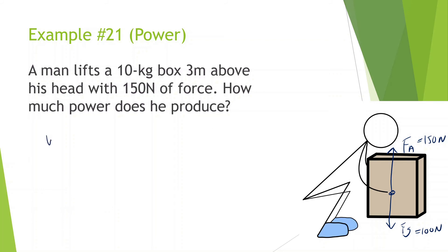So let's see, work done by the force applied. Force applied is 150, displacement is 3, and it's going in the same direction. So it's going to be cosine of zero. So this gives me the work applied: 150 times 3, which is going to be 450 joules.